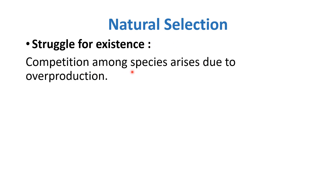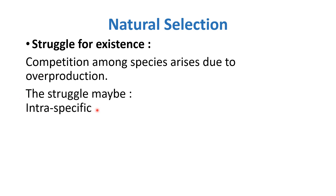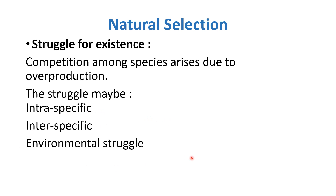The third point discussed in natural selection is the struggle for existence. When organisms produce more, competition will increase — to obtain food, different resources, and nutrients. This competition can be intraspecific, interspecific, and environmental struggle.